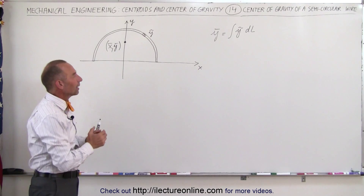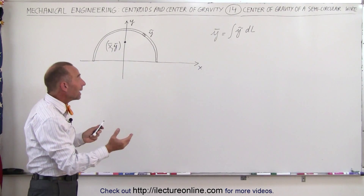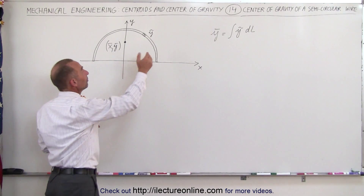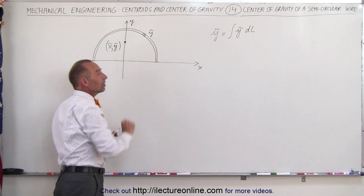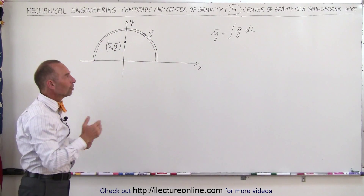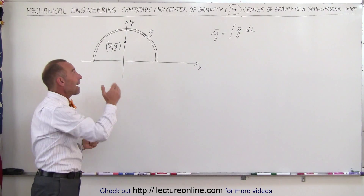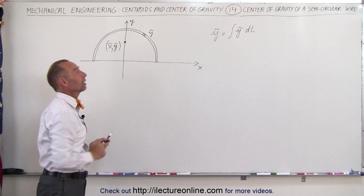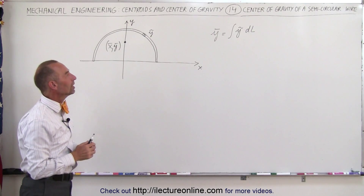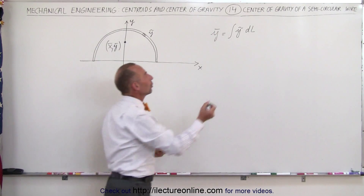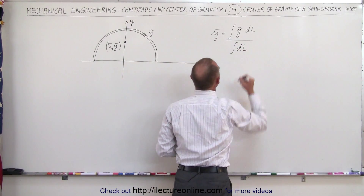Now you might ask: how can I let a length represent mass? But if this wire is of uniform density and uniform thickness, there is a one-to-one correspondence between the mass and the length of that particular wire. It's easier to work with the length, so we'll call it dl. And then we're going to divide that by the integral of dl.